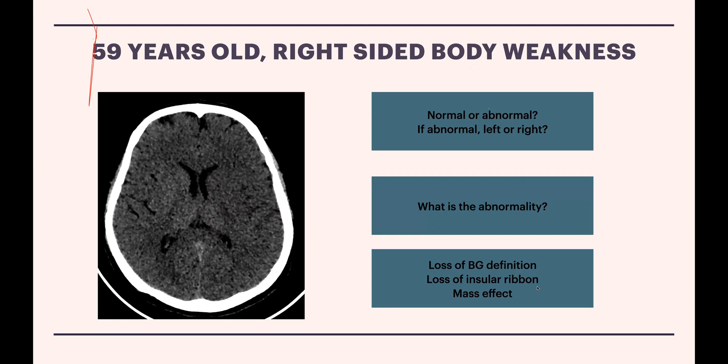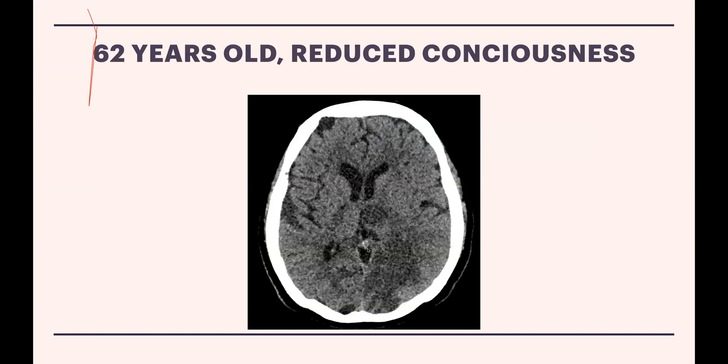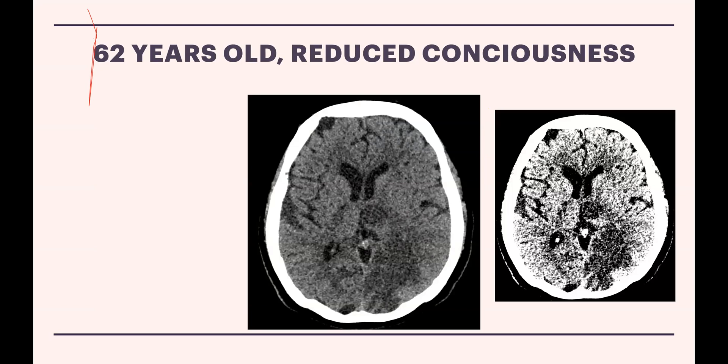Next case: 62-year-old with reduced consciousness. On plain CT the scan looks bizarre with just a dot here and there. Changing to the stroke window reveals one dot and a larger area — not in the MCA territory but involving the thalamus and the occipital lobes. This is a posterior circulation infarct involving bilateral thalami and the occipital lobes.